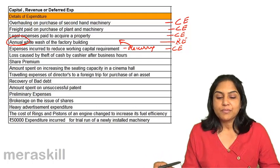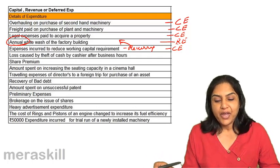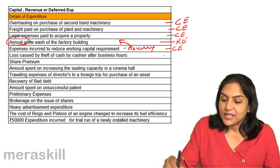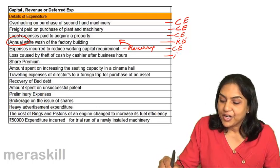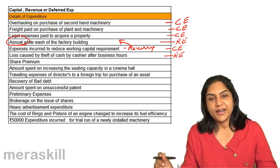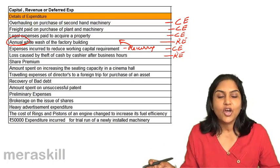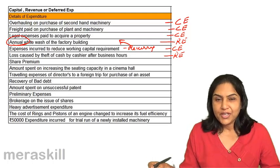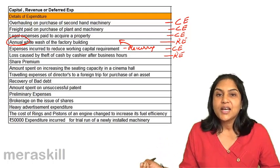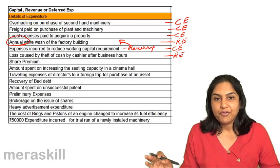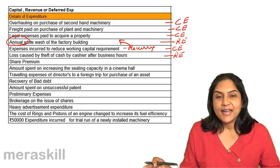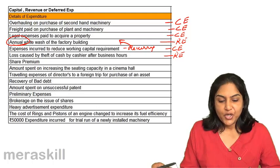Loss caused by theft of cash by a cashier after business hours. This is a revenue expenditure — there is no asset generated. It is a loss suffered due to theft in the ordinary course of business, and therefore we write it off to profit and loss, treated as a revenue expense.